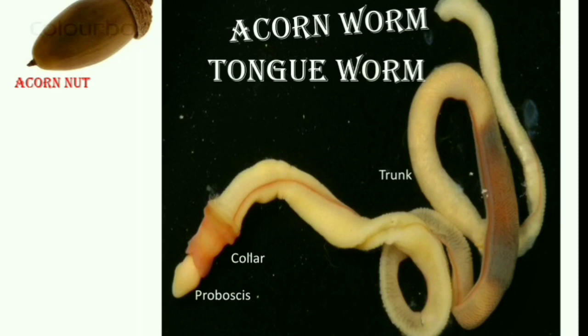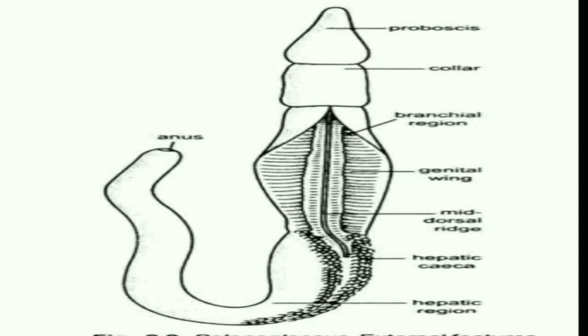This animal is somewhat special. It is a marine animal — exclusively marine, living in seawater. Its habit is burrowing: it makes a burrow in sand or mud, and the burrow is usually U-shaped.